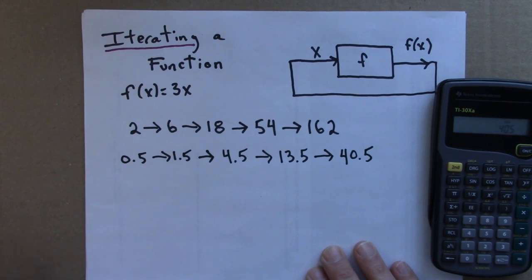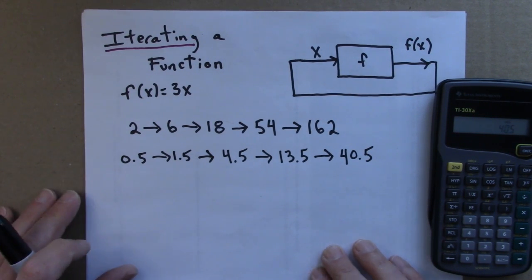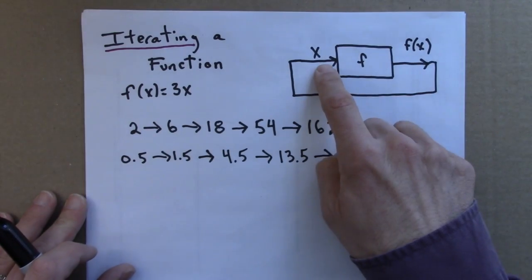So, iterating a function is just applying a function over and over again, using the output as the next input.